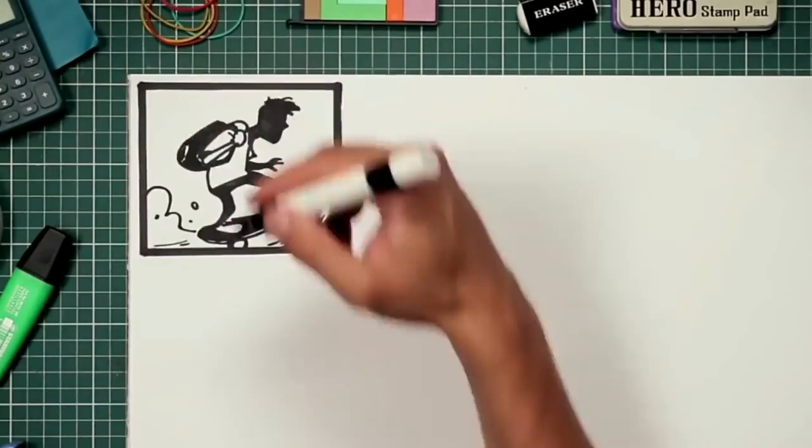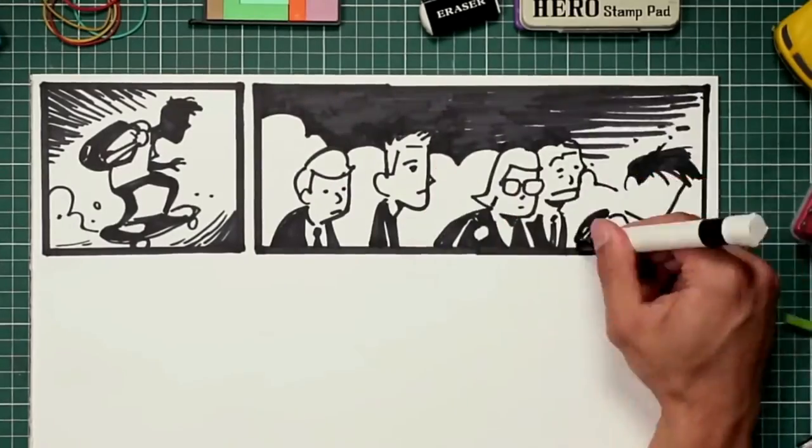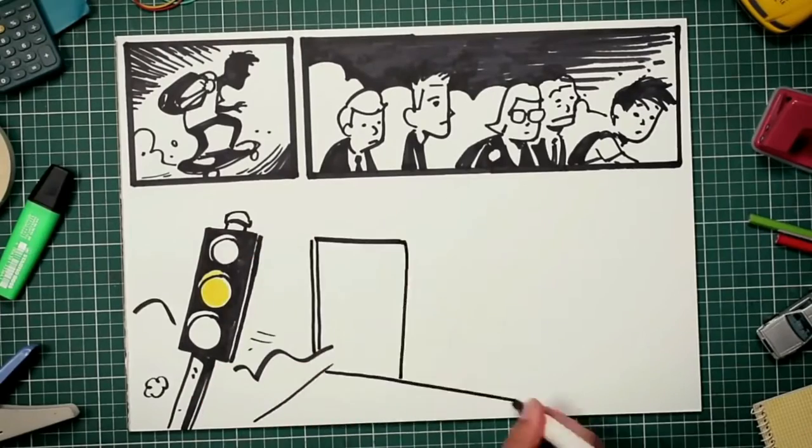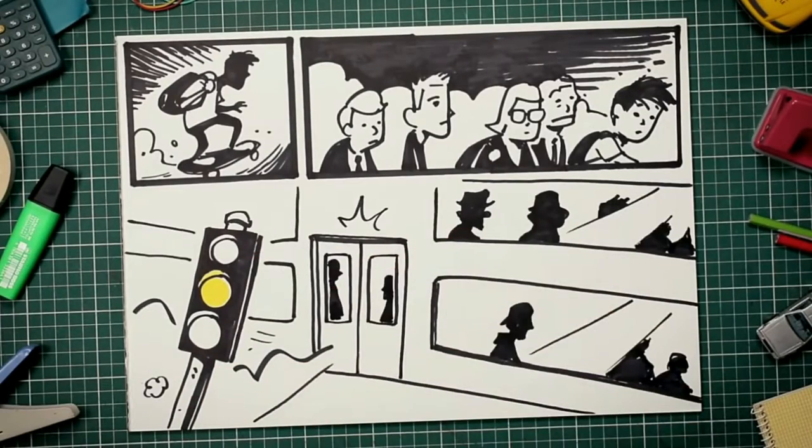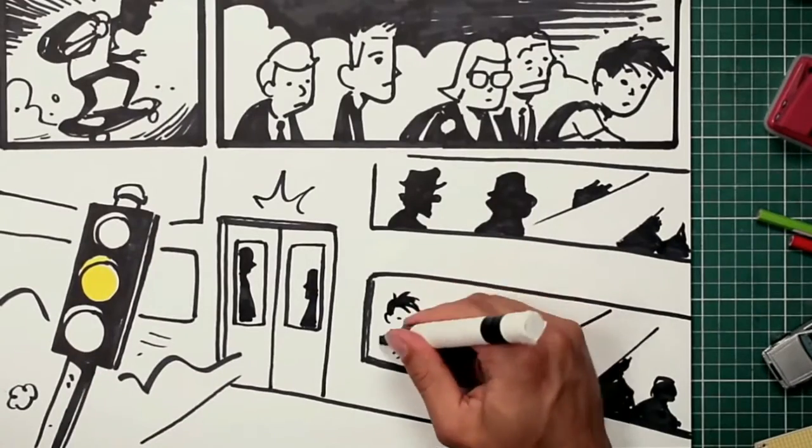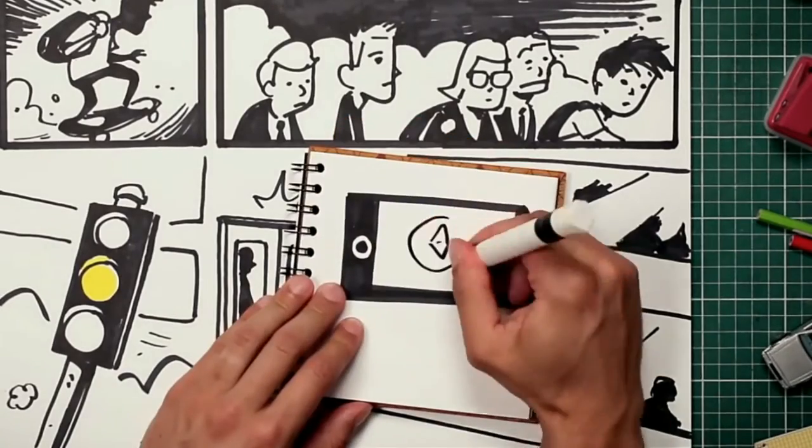You're running late, so you skate downtown, weaving through the commuters, dart across the road, barely making the lights and jump on the train just before the doors beep shut. There's a couple of stops to go, so you pull out your phone and play a few games of Angry Birds.